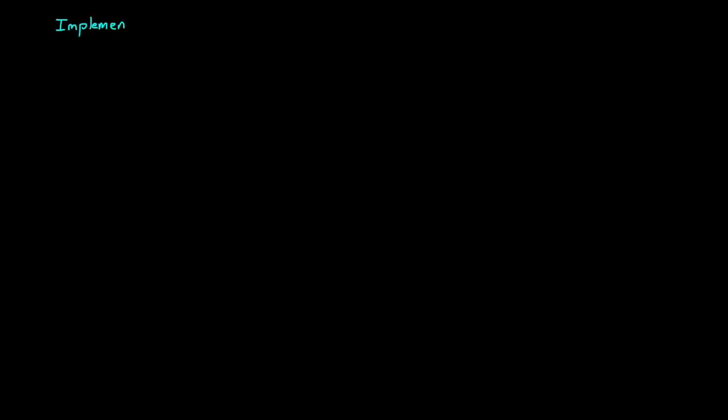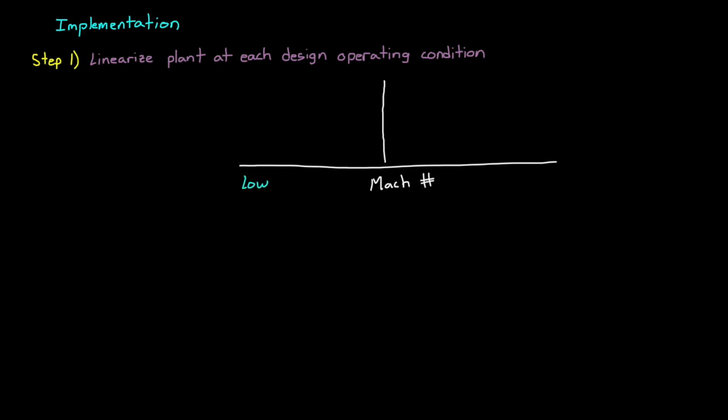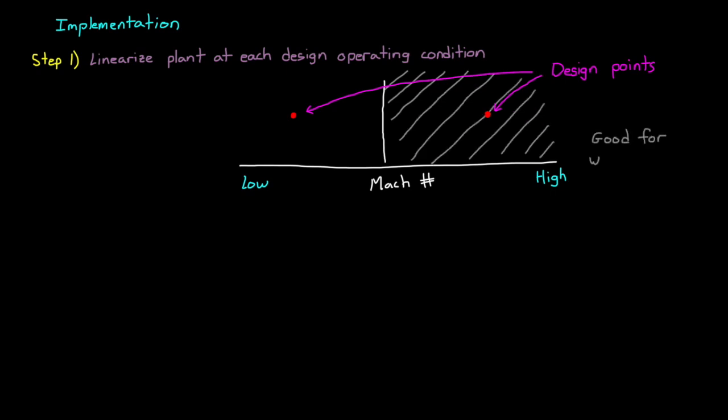So now that we have an explanation of what gain scheduling is, let's talk about how to go about implementing it. There are, in general, four steps. Step one, linearize the plant at each design operating condition. Basically, we want to develop a linear controller, so we need to make sure that we have a linear plant. Let's refer back to our simple schedule that only had two gain sets, one for high Mach numbers and one for low Mach numbers. In this case, you would pick two operating points, one in each area. You'll want to find a point that sort of averages the plant variations over the entire area. That way, when you tune your controller, it has the best chance of still producing adequate performance over the whole region.